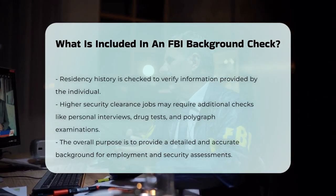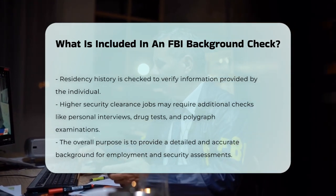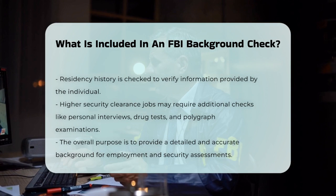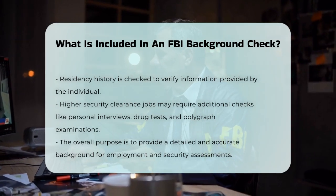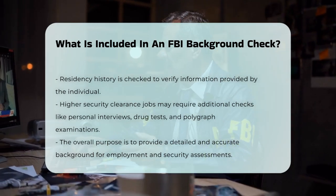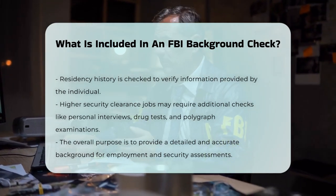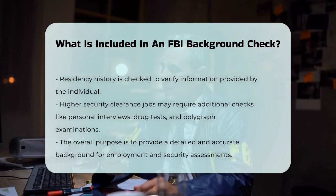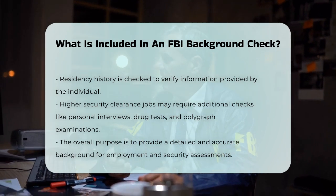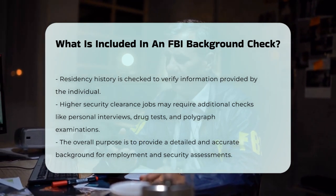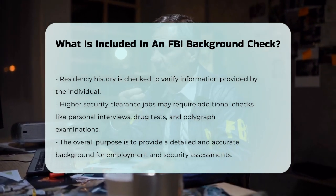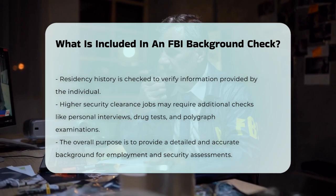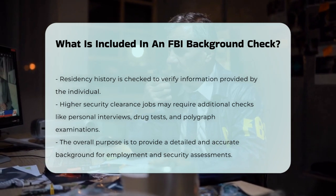In summary, an FBI background check is a thorough process that includes fingerprinting, criminal history checks, employment and education verifications, civil records, and residency history. It's designed to provide a detailed and accurate picture of an individual's background, which is crucial for various employment and security purposes.